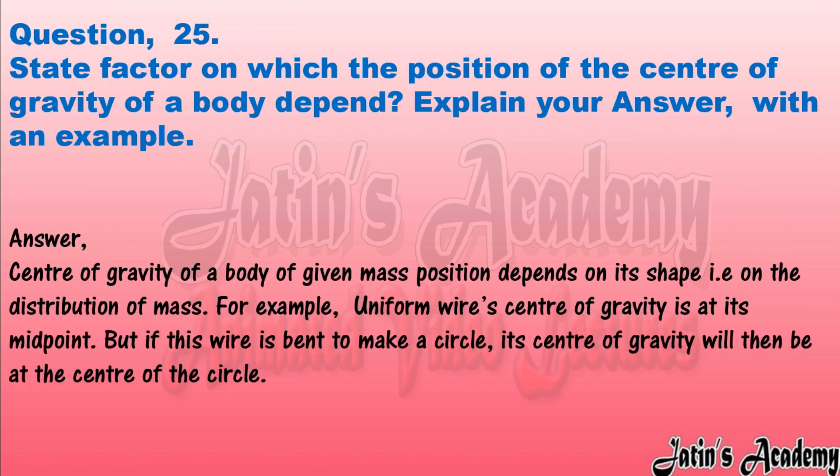Question twenty-five: state the factor on which the position of the center of gravity of a body depends. Explain with an example. Answer: the position of center of gravity depends on the shape of the body, that is, on the distribution of mass. For example, a uniform wire's center of gravity is at its midpoint, but if the wire is bent to make a circle, its center of gravity will then be at the center of the circle.